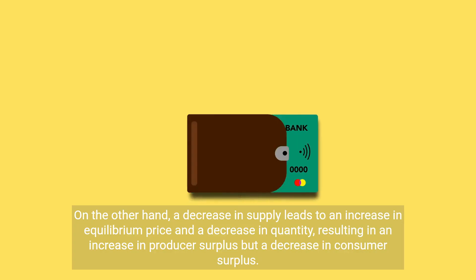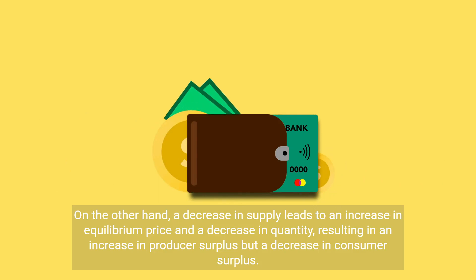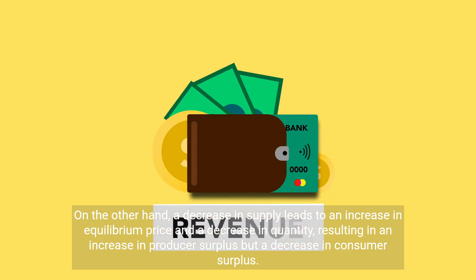On the other hand, a decrease in supply leads to an increase in equilibrium price and a decrease in quantity, resulting in an increase in producer surplus but a decrease in consumer surplus.